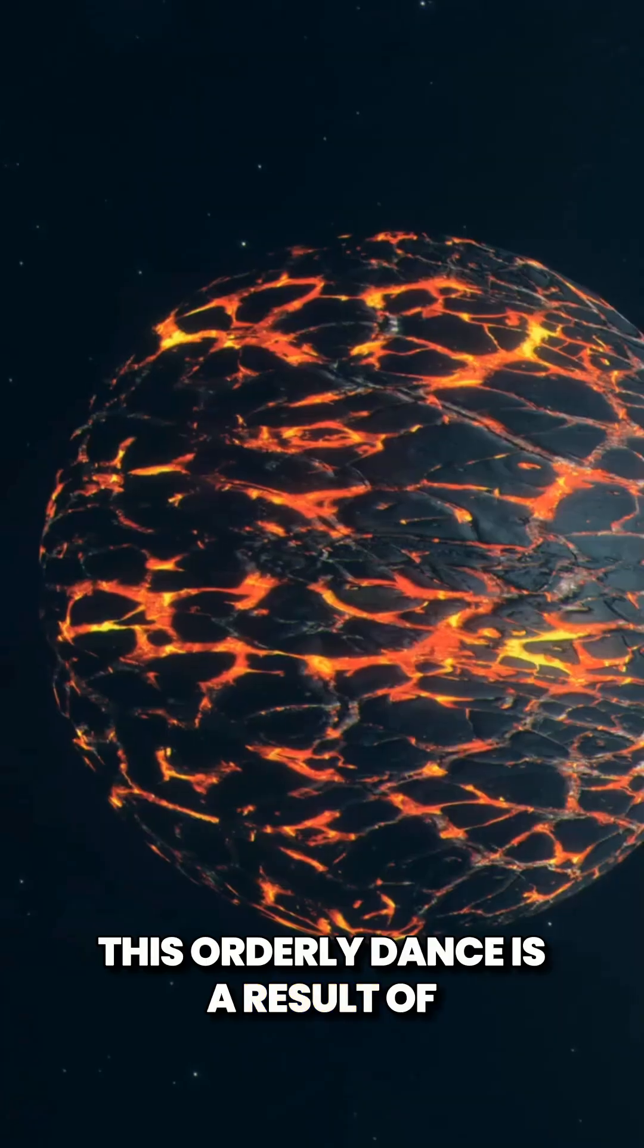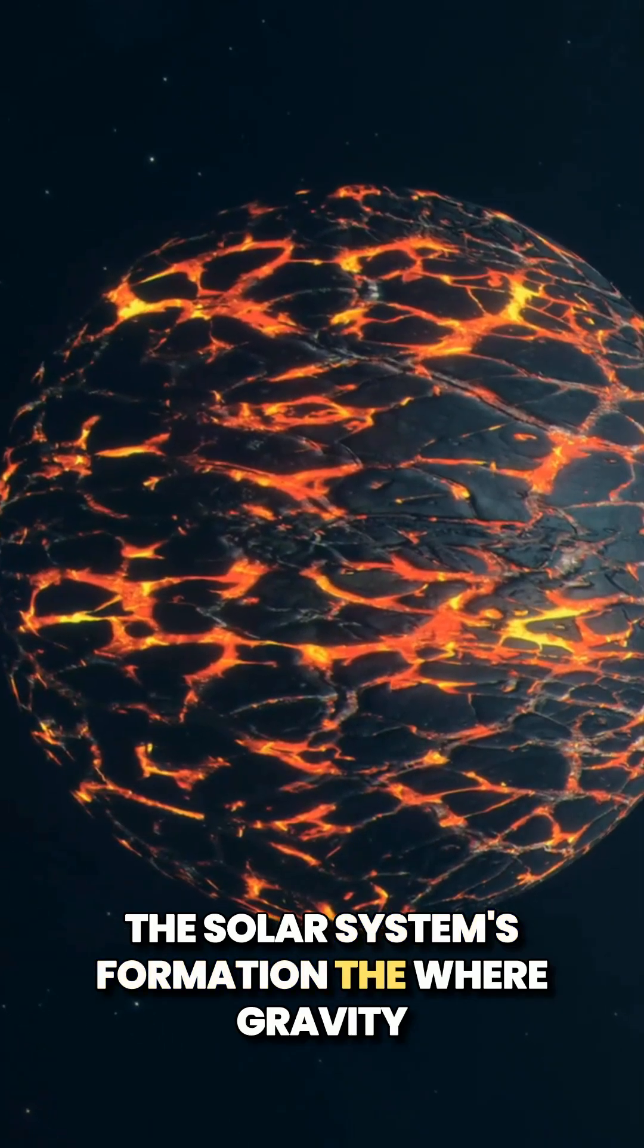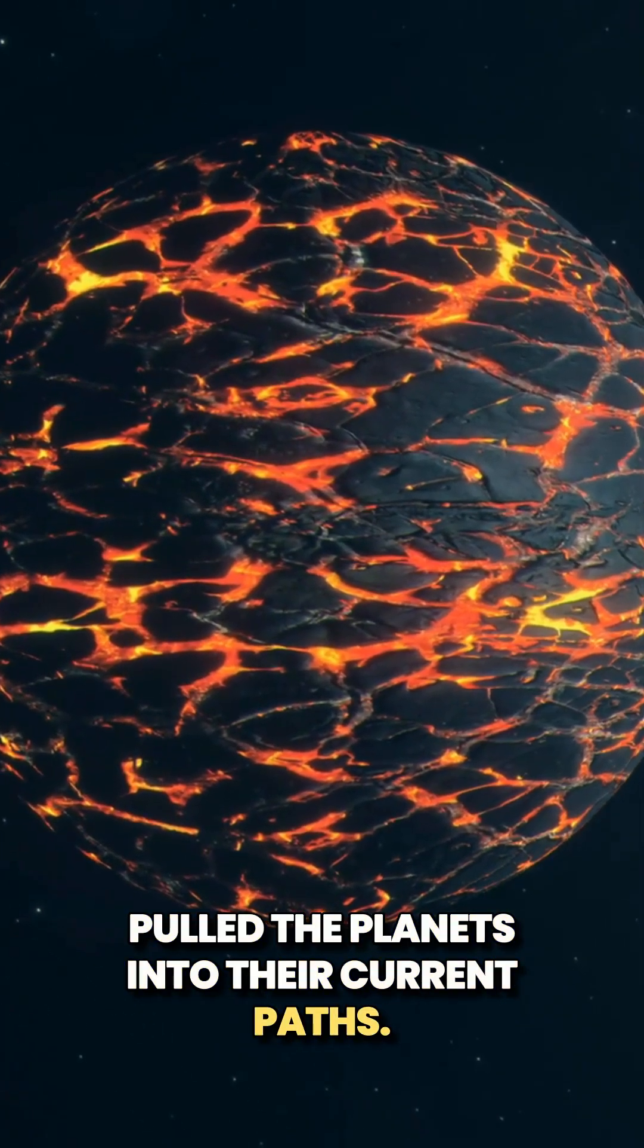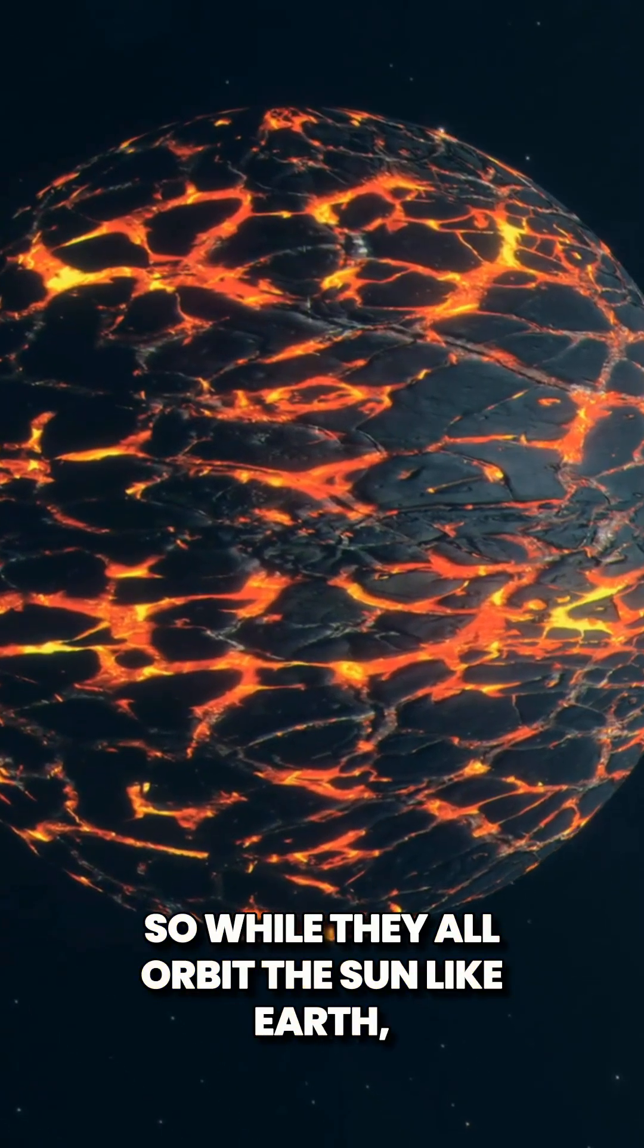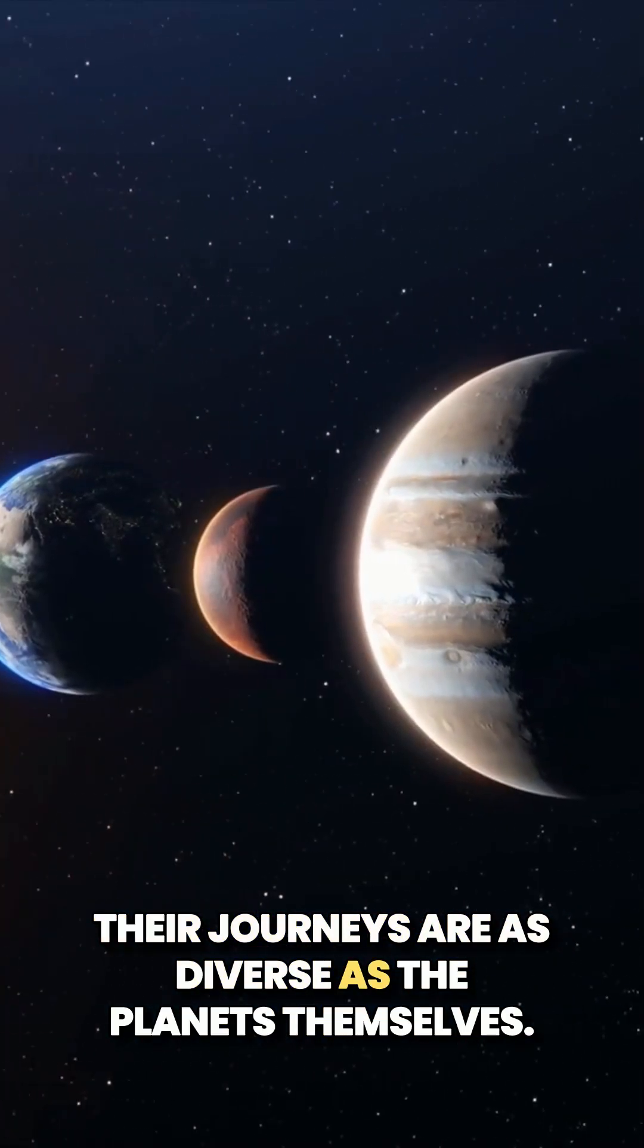This orderly dance is a result of the solar system's formation, where gravity pulled the planets into their current paths. So while they all orbit the sun like Earth, their journeys are as diverse as the planets themselves.